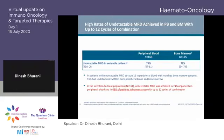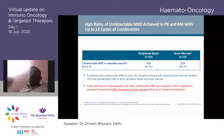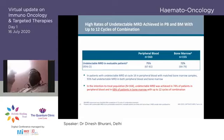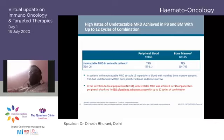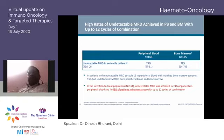The combination of ibrutinib and venetoclax shows very high MRD rates. Unfortunately, venetoclax is not available to us and would be very expensive even if we could access it. Even the western world is moving toward time-limited therapy. I would prefer time-limited therapy over continuous therapy, but ibrutinib as continuous therapy has become accessible and affordable for us, which is good news.